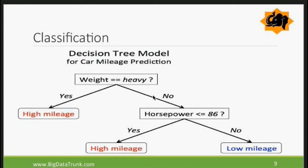Starting with classification: one model to understand it is the decision tree model. It takes an algorithmic approach and keeps making decisions at every point. For example, to find whether a vehicle is high mileage or low mileage, simple questions are asked: is the weight heavy? Based on yes or no, you go to one category or the other. Horsepower is also asked. You get the point — this defines how you go into categories and define classification.